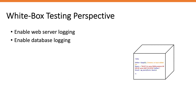For white box testing, where you're given the source code of the application, the first thing I do is enable web server logging and database logging. Enabling web server logging helps because when fuzzing the application it generates errors for invalid characters, helping you detect SQL injection. Database logging lets me see how the SQL injection payload was logged at the back end — what characters made it through and in what format — allowing me to determine with about 90% accuracy whether it's vulnerable to SQL injection before even looking at the source code.